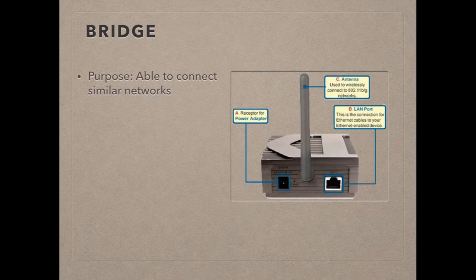A second example: there are two networks where computers on one are connected with cables and in the other are connected using wireless technology. The wired computers can only communicate with other wired computers. With a network bridge, all the computers can communicate with each other.